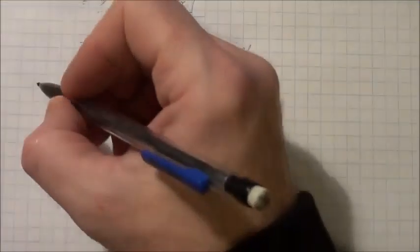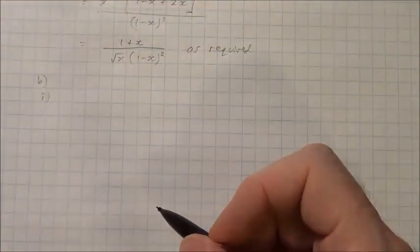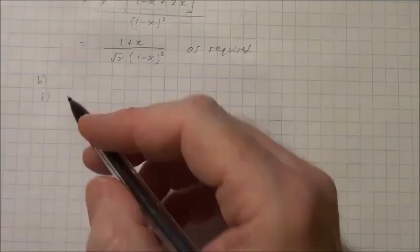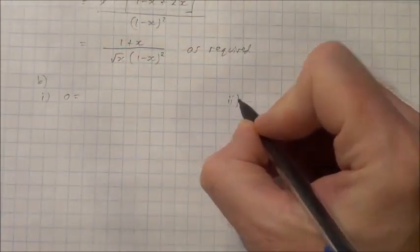Part b asks us to find when dy/dx equals 0, that's for part 1, or is undefined, which is part 2.